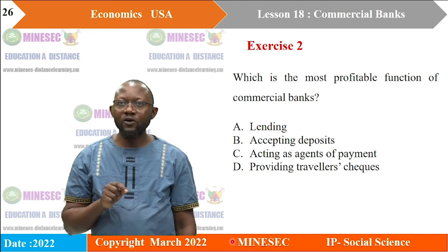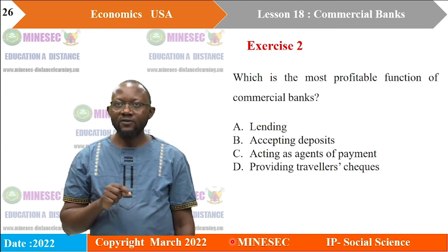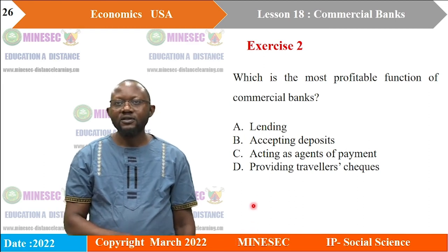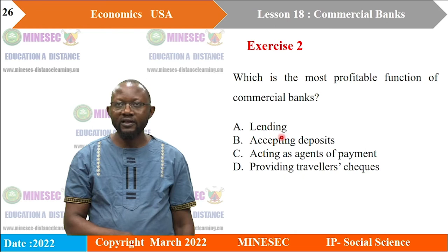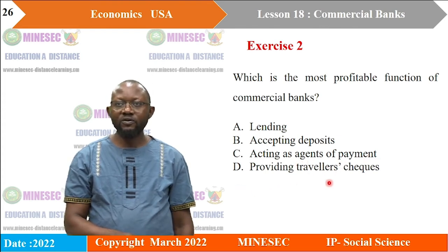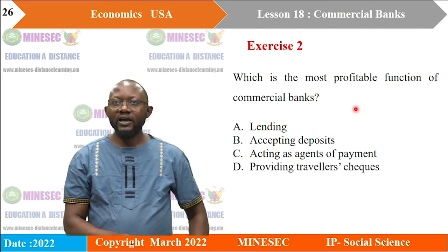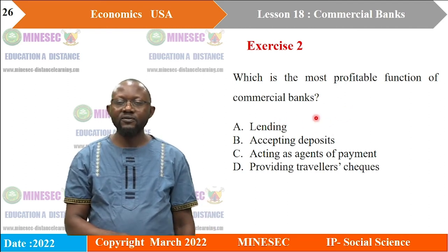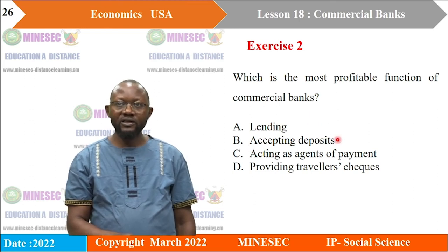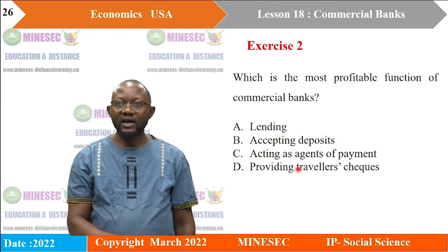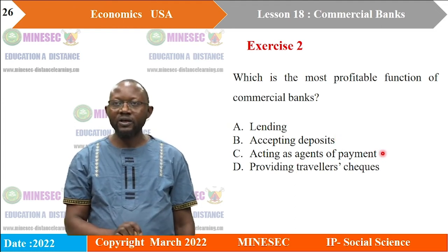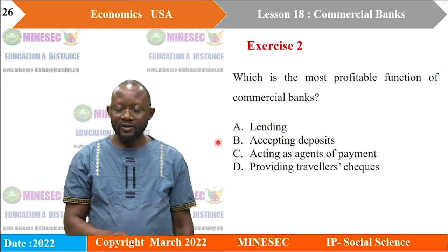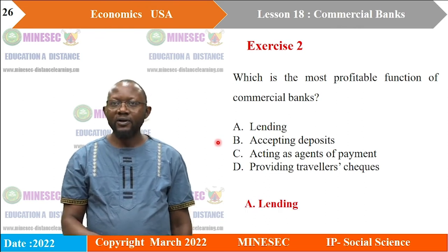Exercise 2: Which is the most profitable function of commercial banks? A. Lending. B. Accepting deposits. C. Acting as agents of payment. D. Providing travellers' cheques. Lending is the correct answer — A.